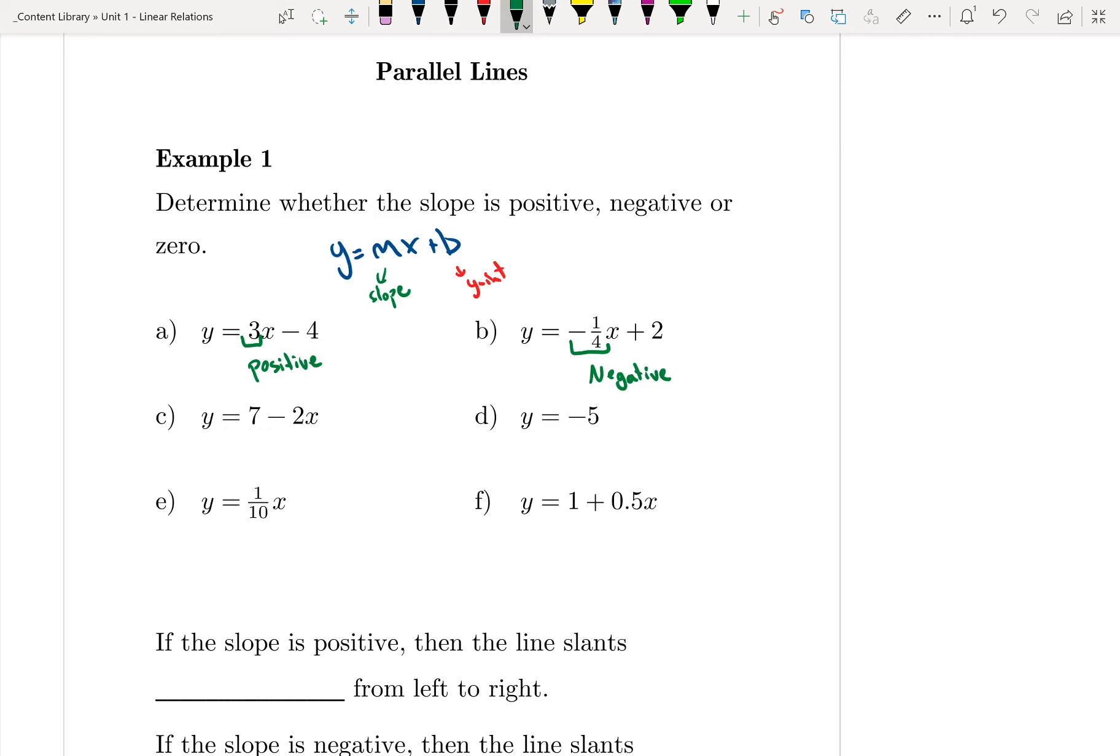For c, even though it's rearranged or in a different order, I'm still looking at the value in front of x. In this case, negative 2, so that means my slope is negative.